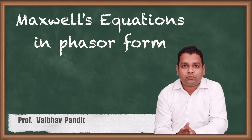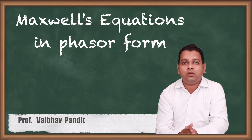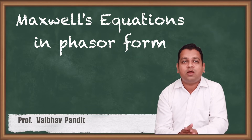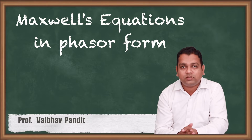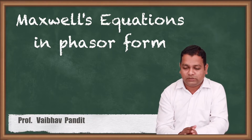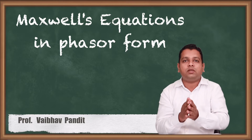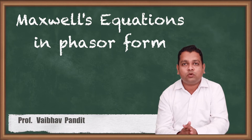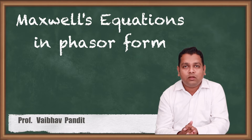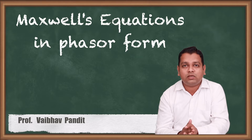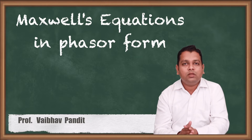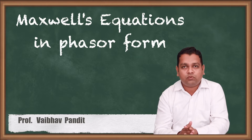Up till now in the previous chapter we have seen Maxwell's Equations for Time Constant Fields, also called Time Invariant Fields, along with another set of Maxwell's Equations for Time Varying Fields. Our subject is Electromagnetic Field Theory and the common example of this electromagnetic field is the electromagnetic wave. With this video we are going to see exactly what the electromagnetic wave looks like, with the electric field produced by static charge and the magnetic field produced by current.